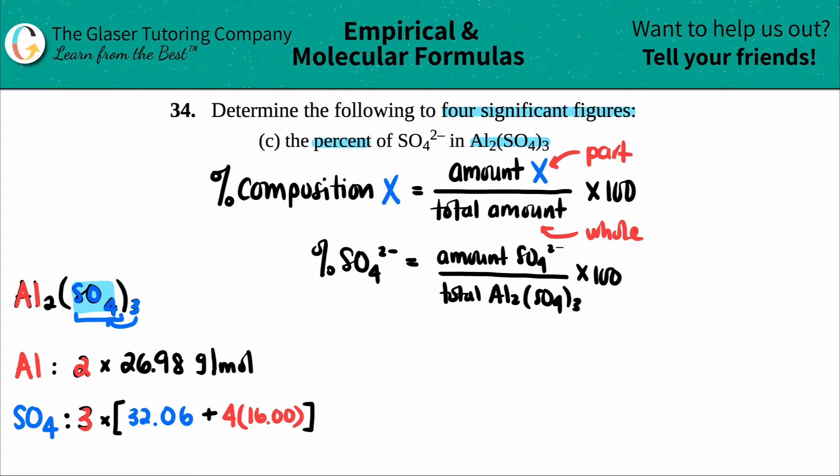The first thing I'll do—you see SO₄ and there's three of them, right, because of the three up here. So I'll get this answer. In the calculator: 32.06 plus four times 16, so I get 96.06. I'm going to erase this. This is 96.06 grams per mole. I'll put a note that this was for SO₄.